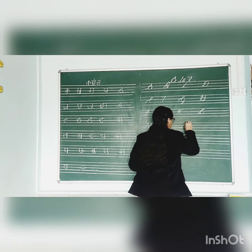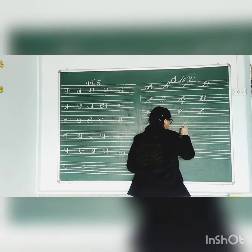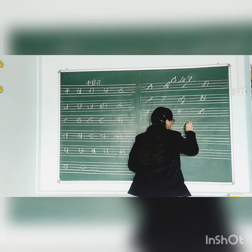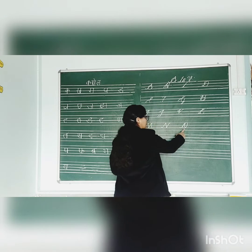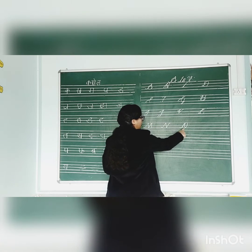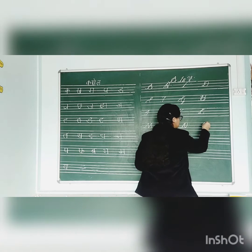Next. Make a curve. Slanting line. Then slanting line. Then slanting line. And then curve. Cursive N. Next. Make a curve. Slanting line. Round, back then round. Then curve. Cursive O.